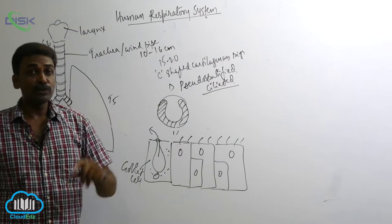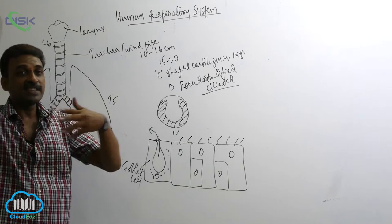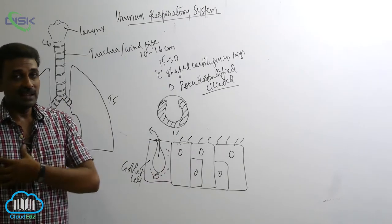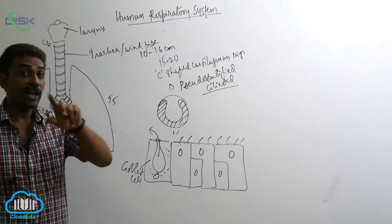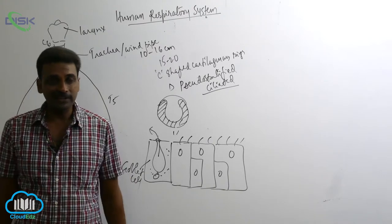In the wall you will also find smooth muscles. Externally trachea is attached to other parts of the body, other organs in the thoracic cavity with the help of areolar connective tissue.